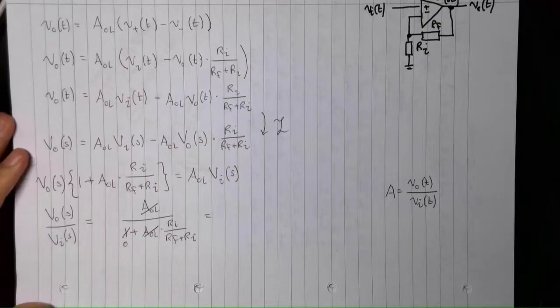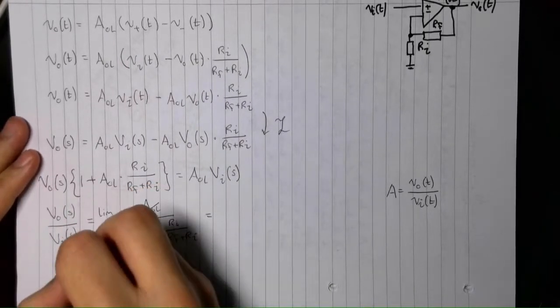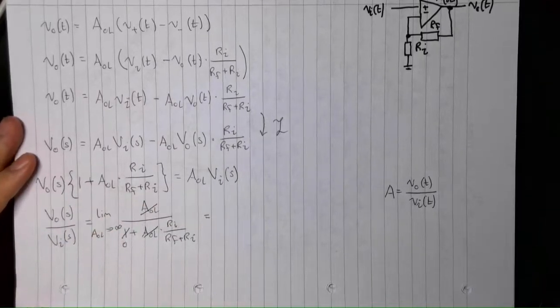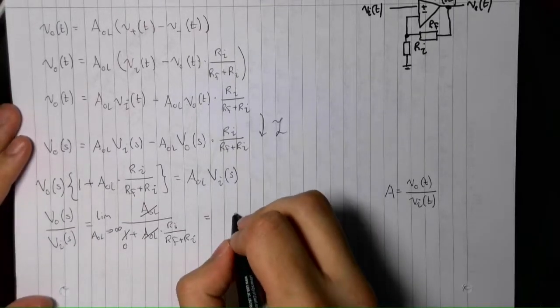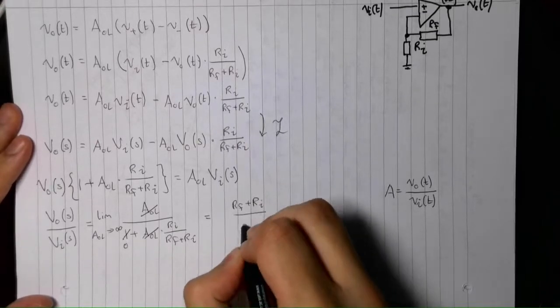So, we can say this is effectively now equal to, well, actually, technically, we just say the limit as AOL approaches infinity. Although, it's getting a bit cramped in here now. Hopefully, you can see that. So, that is equal to RF plus RI on RI.